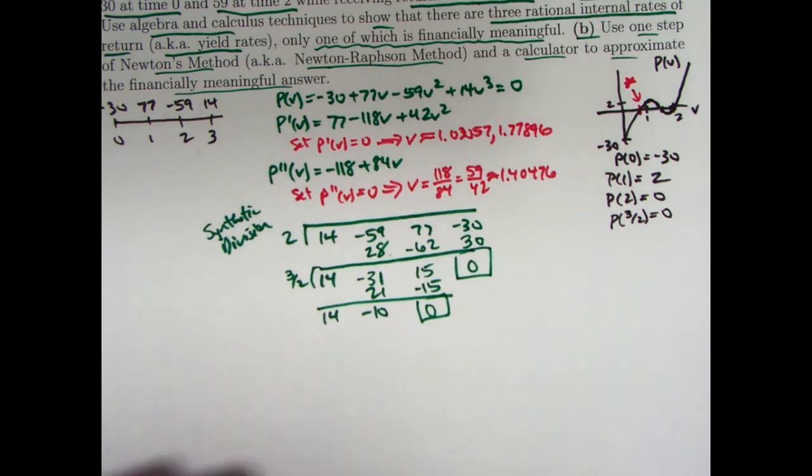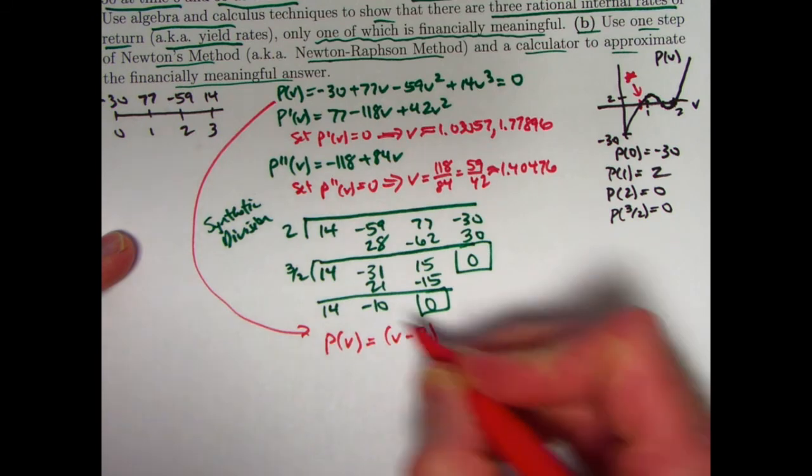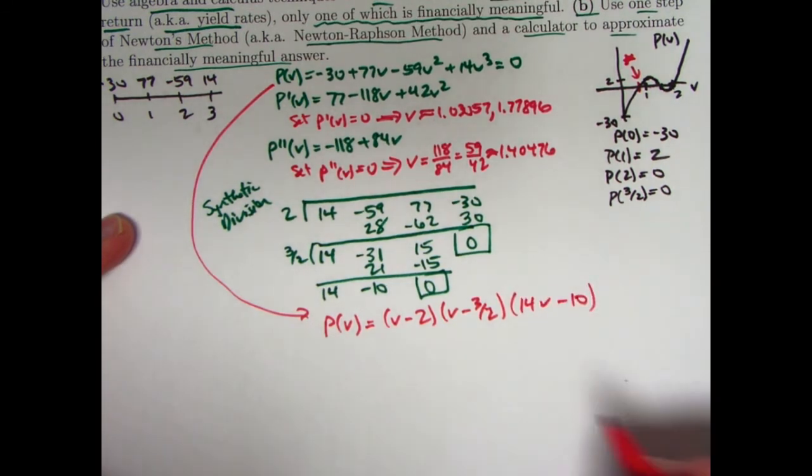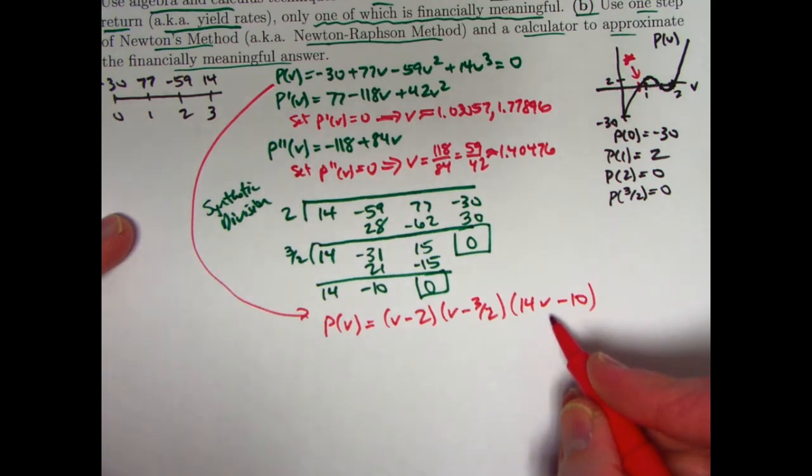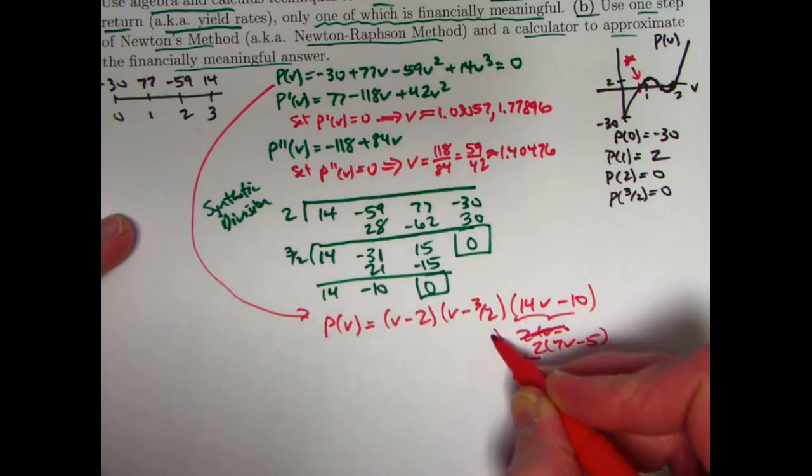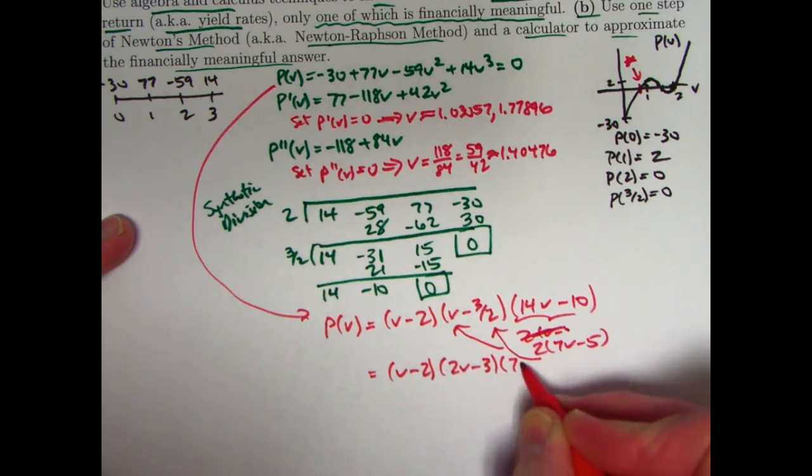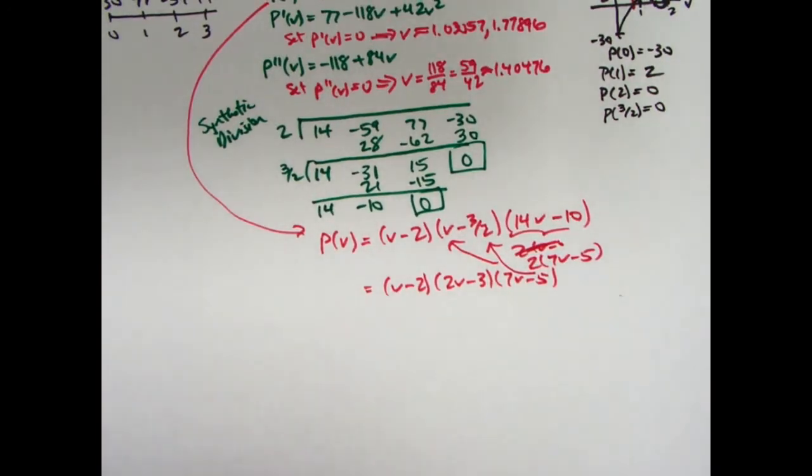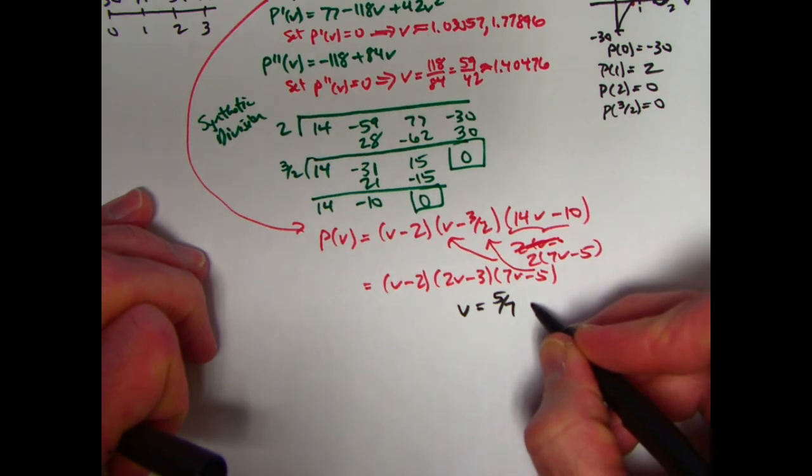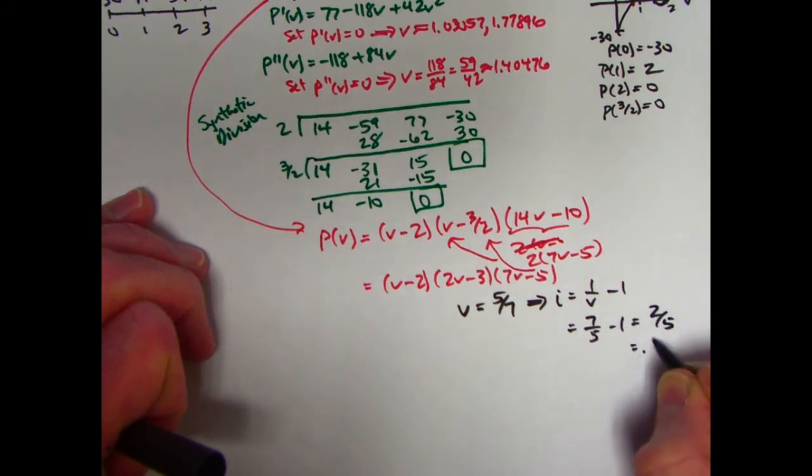It's going to allow us to factor p(v) as v minus 2 times a quadratic whose coefficients are these numbers: 14v squared minus 31v plus 15. Before I show you that next step, if one of these coefficients were 0, you would want to include the 0 there. Now I'm going to do it again using the fact that I know 3 halves is a root. If you didn't know 3 halves was a root and you didn't know the rational root theorem, you could guess it from the graph, try your graphing calculator, or use the quadratic formula.